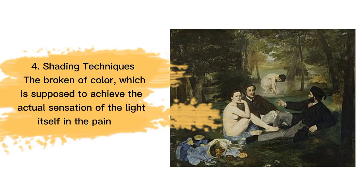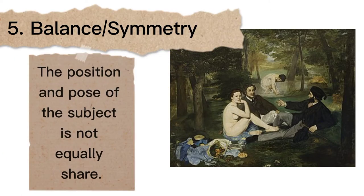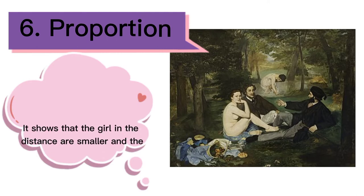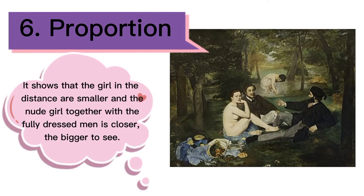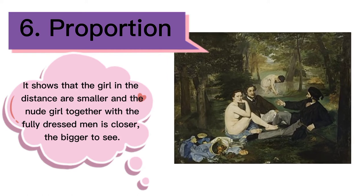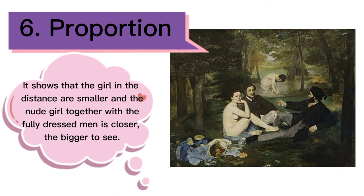Number 4 is the shading techniques. They create darker points on both sides to correspond with the specific light source and to achieve the actual sensation of light in the painting. Number 5 is the balance or symmetry. As we look at the picture, the position and pose of the subjects are not equally shared. Number 6 is the proportion. The girl in the distance appears smaller, and the nude girl together with the fully dressed men closer to the viewer appears bigger.